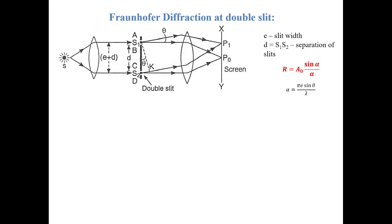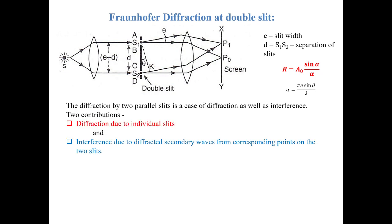Let us start the Fraunhofer diffraction at double slit. Here, the single slit is replaced by double slits S1 and S2. S1 and S2 each have width e, and d is the separation between the two slits. This is a case of diffraction as well as interference. Therefore, there are two contributions to the intensity: one is the diffraction by individual single slits.